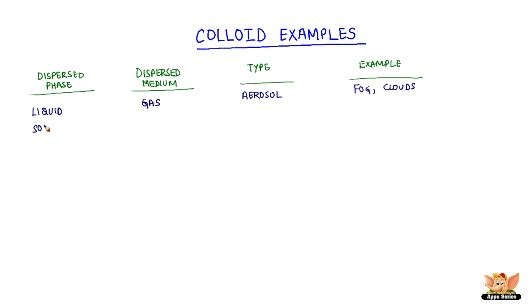A solid dispersed phase in a gas medium is also called aerosol. Smoke is an example of this kind — it actually has small solid particles in it.